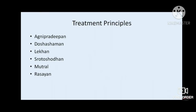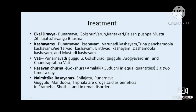Treatment principles are: agni pradipana, dosha shamana, lekhana, sroto shodhana, mutravaha, and rasayana. These can be achieved using kashaya, vati, rasayana, and churna. Key drugs include punarnava, gokshura, varuna, kantakari, palasha, kushtha, musta, shilajit, and trimanga bhasma.